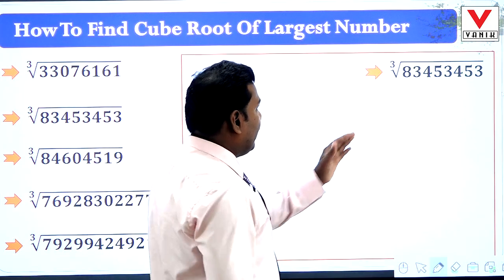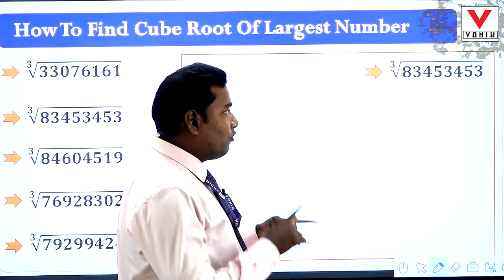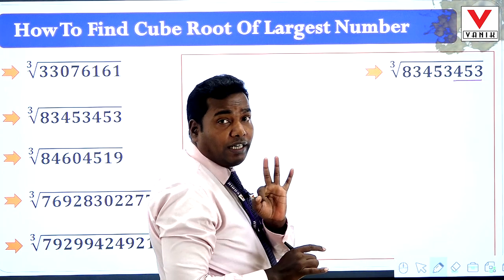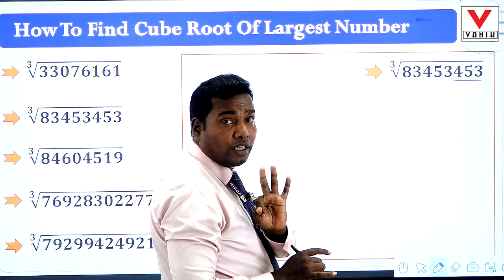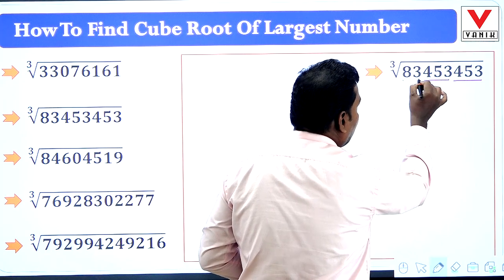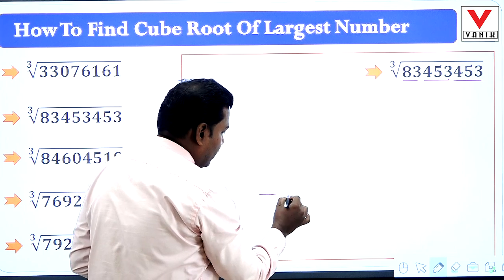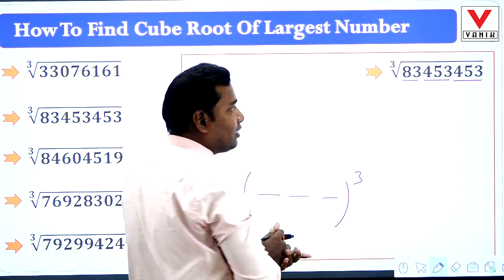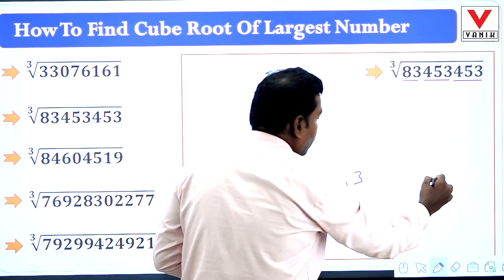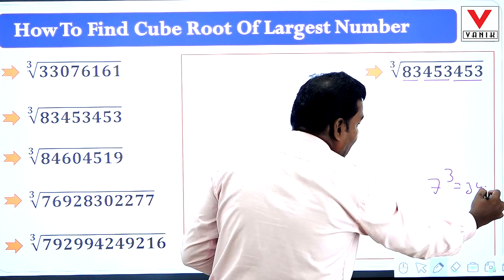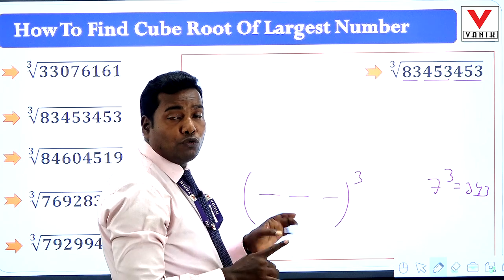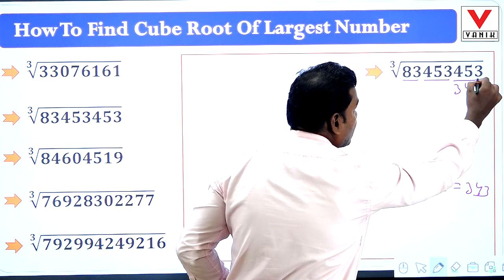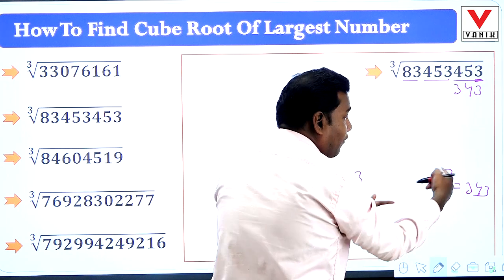Come to the next number 83453453. We make groups of 3 numbers from the right: three groups, so this is a 3-digit number. The unit place digit is 3. Since 7 cube is 343, the unit digit of 343 is 3, so the last digit of our answer is 7. We write 343, then subtract: 3 minus 3 = 0, 5 minus 4 = 1, 4 minus 3 = 1, leaving us with 5 in the tens position.